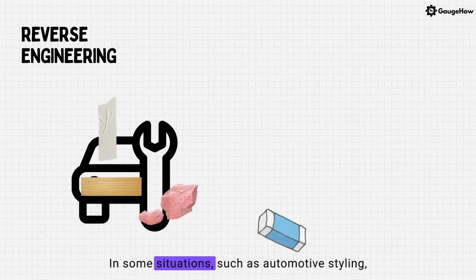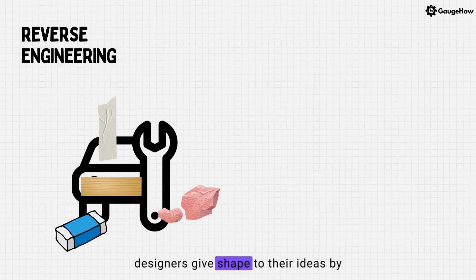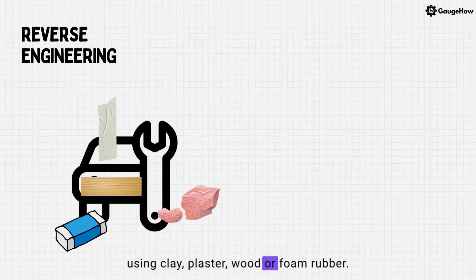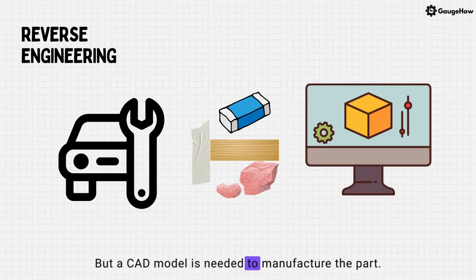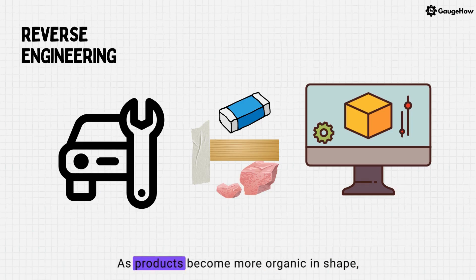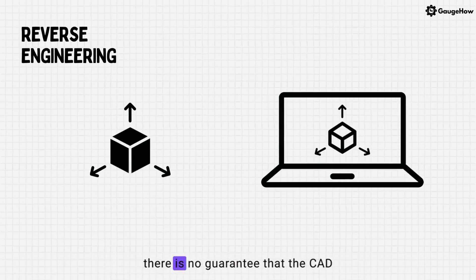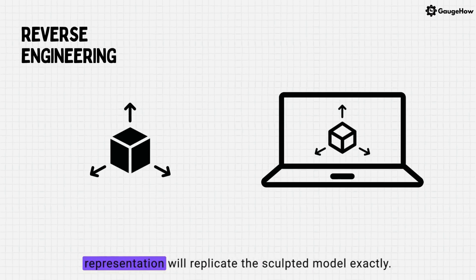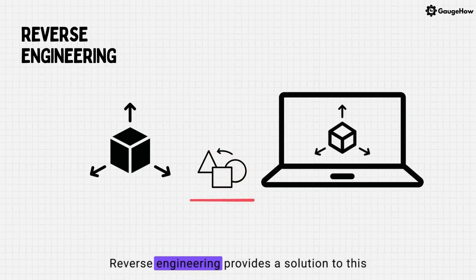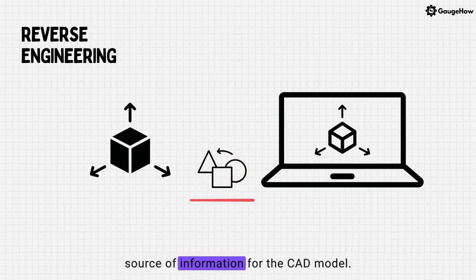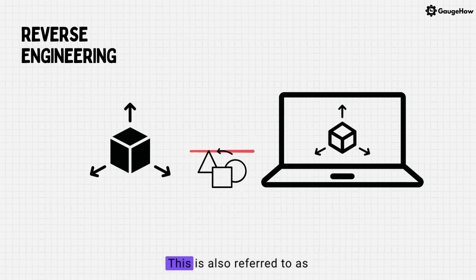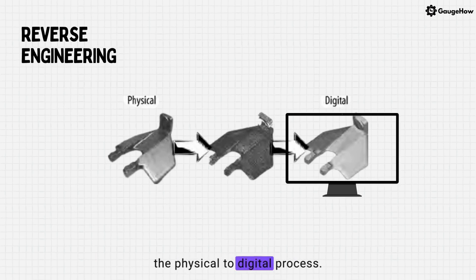In some situations, such as automotive styling, designers give shape to their ideas by using clay, plaster, wood or foam rubber. But a CAD model is needed to manufacture the part. As products become more organic in shape, designing in CAD becomes more challenging and there is no guarantee that the CAD representation will replicate the sculpted model exactly. Reverse engineering provides a solution to this problem because the physical model is the source of information for the CAD model. This is also referred to as the physical to digital process.